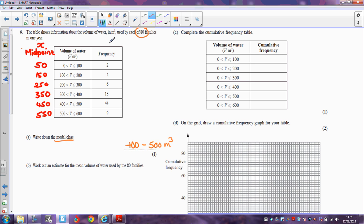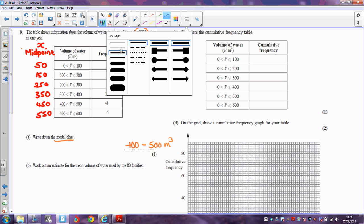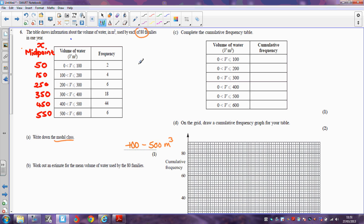And what I've now got to do is work out an estimate for the total amount of water which is used by all of those families. So I'm going to multiply. So these two families each used 50 cubic metres of water. So the total amount used by them, I'm going to multiply X by F. So those two families together, we can estimate that they used 2 times 50, which is 100.